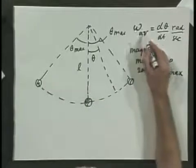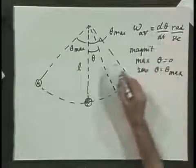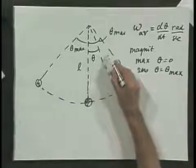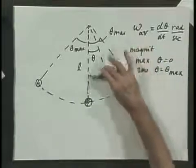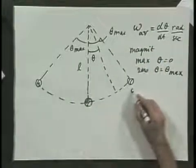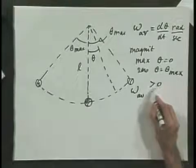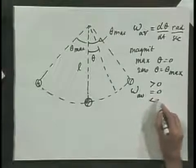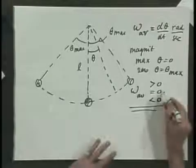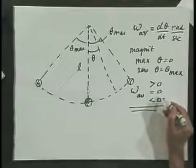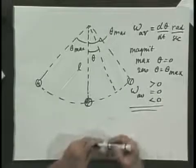The angular velocity can be positive if dθ/dt is increasing — if it goes in one direction — and it can be negative when it goes in the other direction. So the angular velocity can be larger than zero, equal to zero, or smaller than zero. The bottom line is it is changing all the time; it can change sign and it changes magnitude.